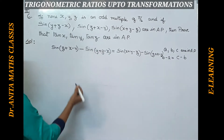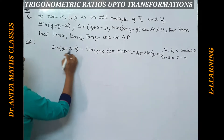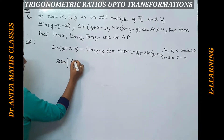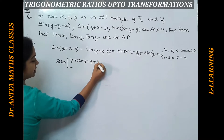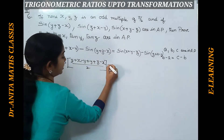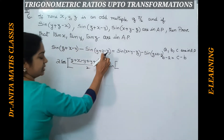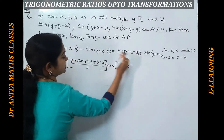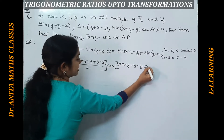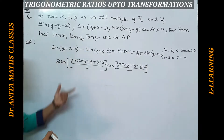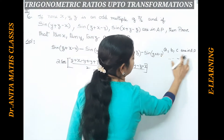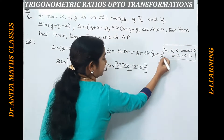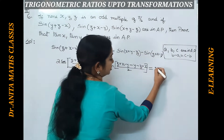We will apply the sine C minus sine D transformation. This gives us 2 cos of (C+D)/2 times sine of (C−D)/2. So for the left side, C is (z+x−y) and D is (y+z−x). So C+D divided by 2 gives us (z+x−y+y+z−x)/2, and C−D divided by 2 gives the remaining terms. We do the same transformation for the right side.